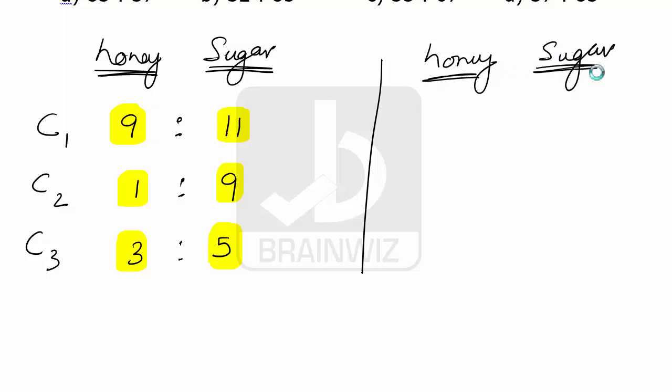For honey as well as sugar, here we have 9 plus 11, 20 parts; 1 plus 9, 10 parts; and 3 plus 5, we have got 8 parts.